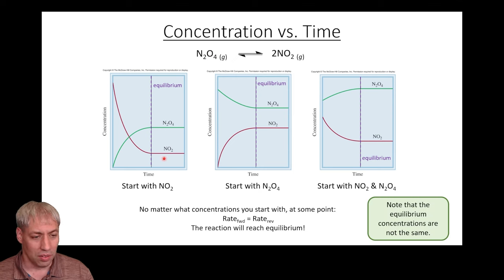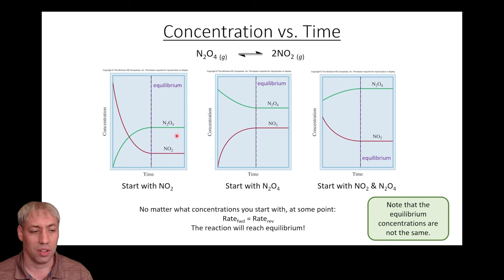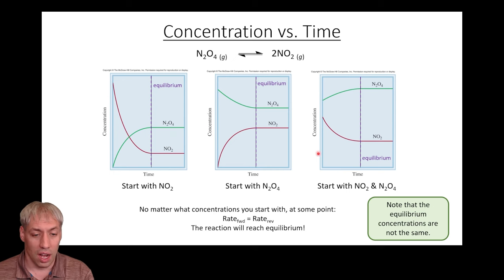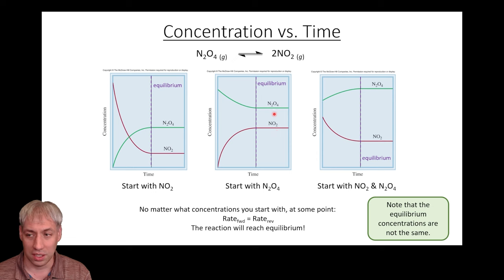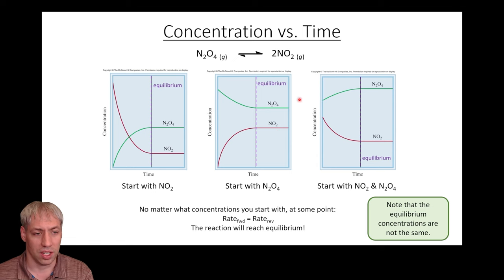Something to note is that the concentration ratios are not always the same — it depends on where you start. In all three cases, N₂O₄ is larger than NO₂, but the proportionality is not always the same. The ending point depends on where you're starting and what the stoichiometry of the equation is.